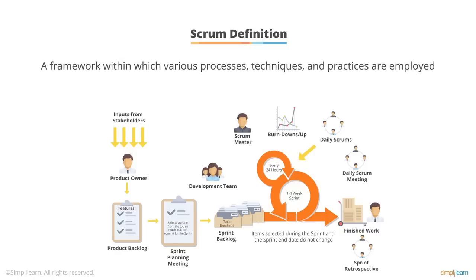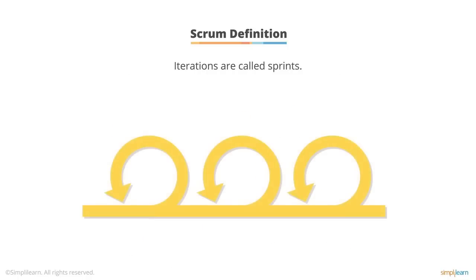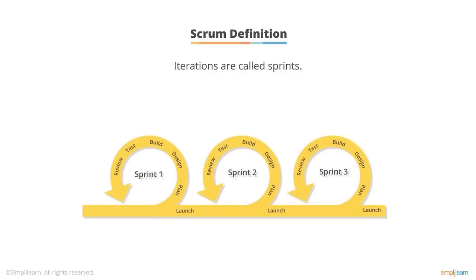Scrum is not a process or technique for developing software. Rather, it is a framework within which various processes, techniques, and practices are employed. In Scrum, the iterations that deliver working software to the customer are called sprints. Each iteration, or sprint, results in potentially shippable software.